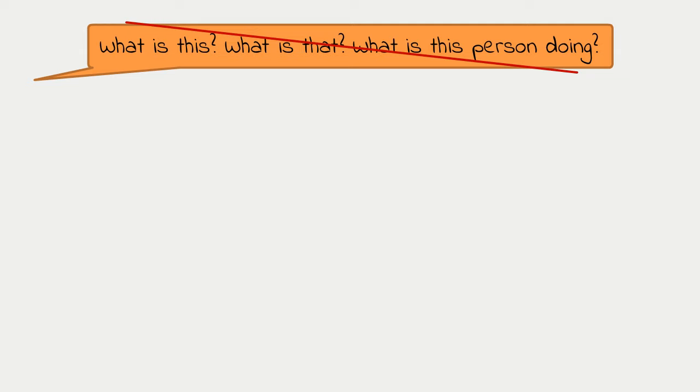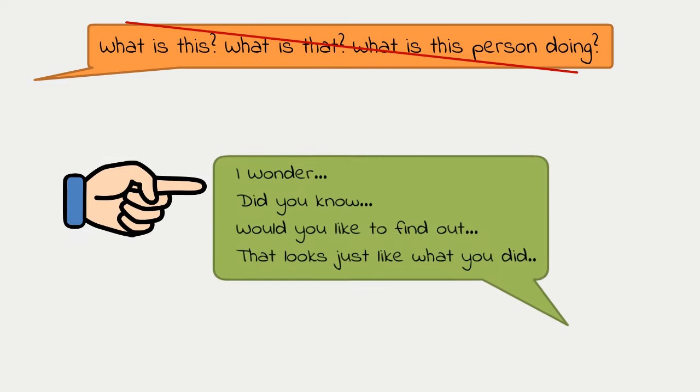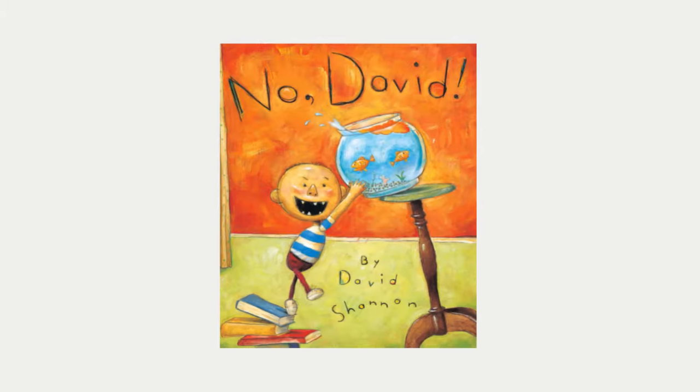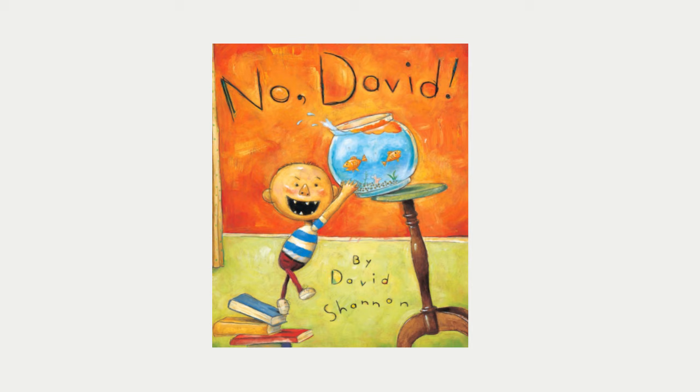To make a good hook statement, we want to use words like 'I wonder,' 'Would you like to find out?' 'That looks just like what you did.' For example, we could say something like this: 'That silly boy looks just like you. I wonder what's going to happen to these fish. Would you like to find out?'